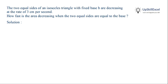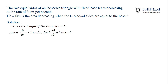Given an isosceles triangle with fixed base B and sides decreasing at the rate of 3 cm per second, we have to find out how fast the area is decreasing when the sides are equal to the base. Let S be the length of the isosceles side. We are given that dS/dt is equal to minus 3 cm/s and we have to find dA/dt when side is equal to base.